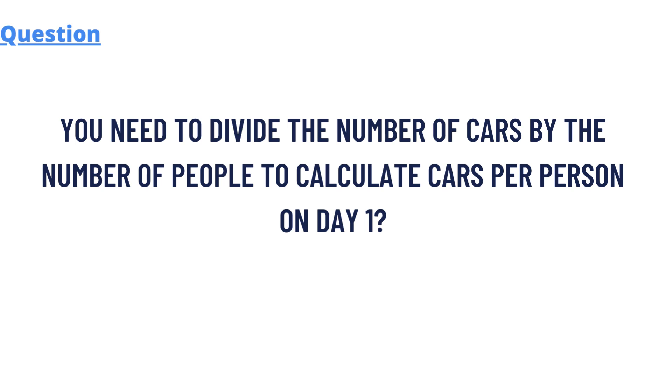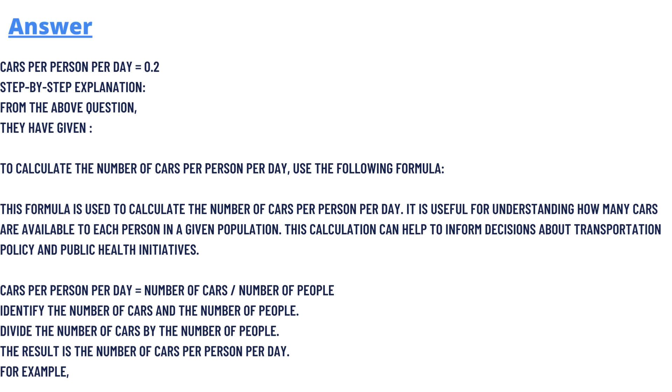This is the question. We have the answer: cars per person per day is 0.2. This is a hypothetical example. Step-by-step explanation: to calculate the number of cars per person per day, we will use the following formula.